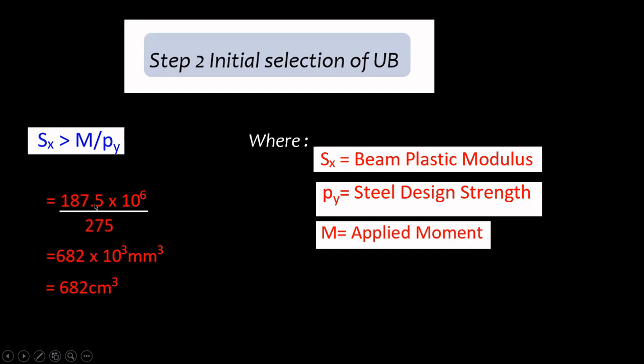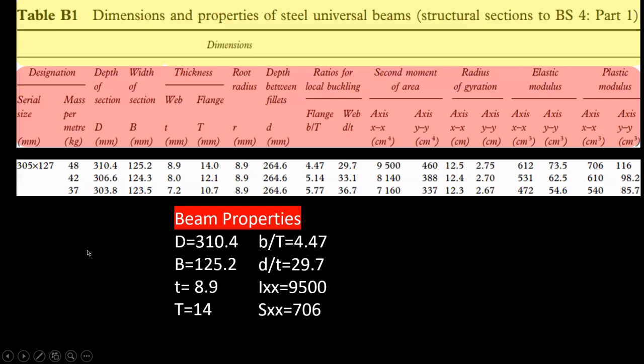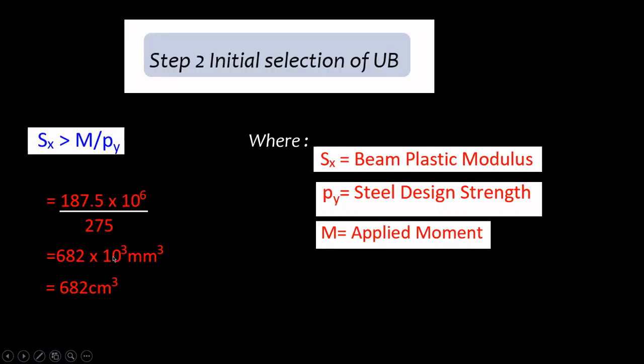Now, the value of the section modulus in the steel tables is not given in millimeters. It's not given in millimeters, it's given in centimeters. So again, you have to convert this to centimeter and you get 682 cm³.